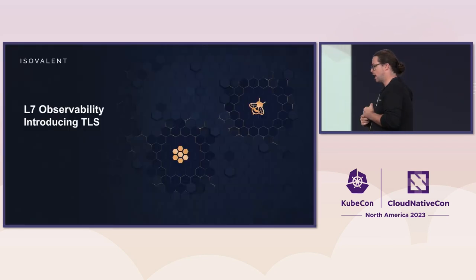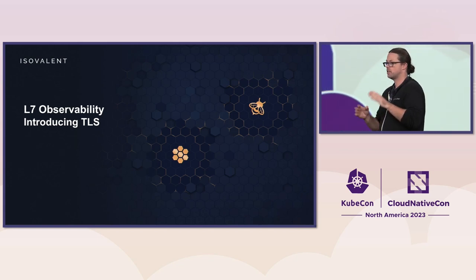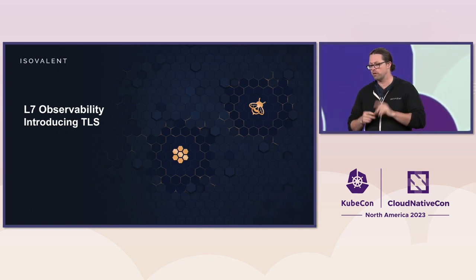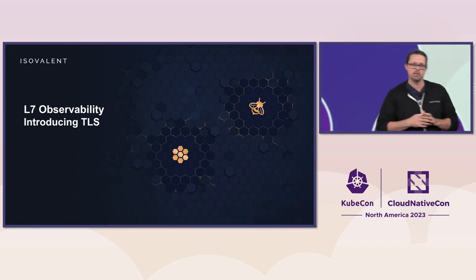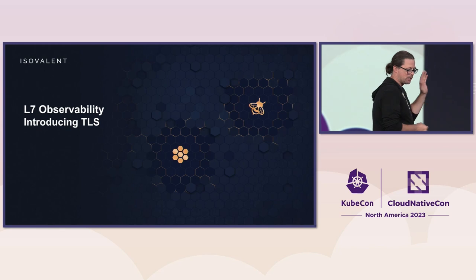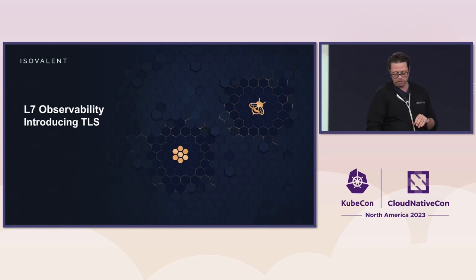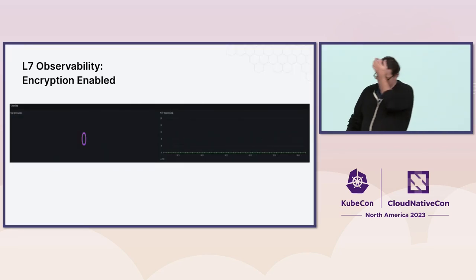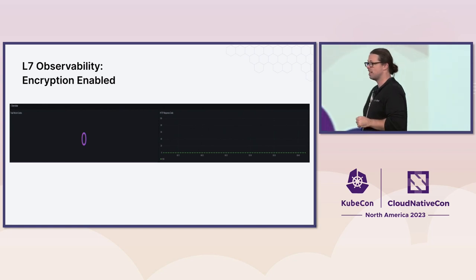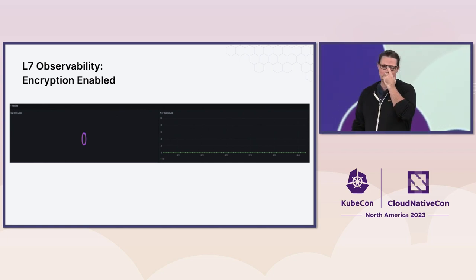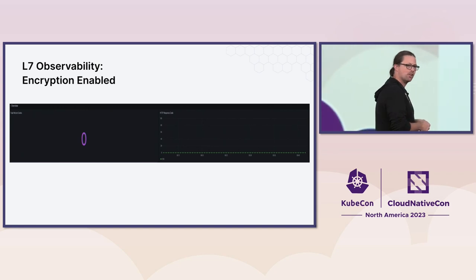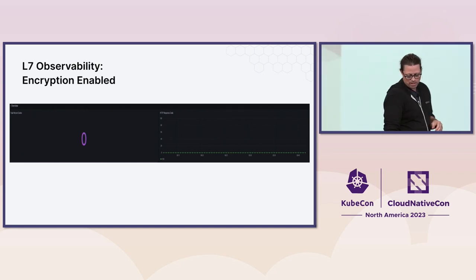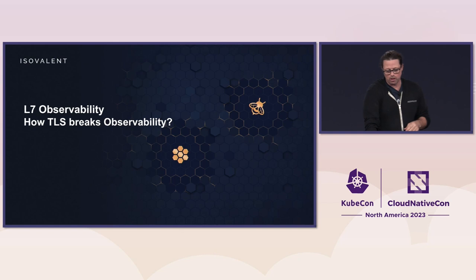But what happens when we want to encrypt stuff for zero trust, service mesh — all the words we keep hearing about? Everybody says let's encrypt, so we do that. And then our dashboards go blank, because everything's encrypted and we don't know anything about HTTP anymore because it's all wrapped in TLS. Everything's broken. We need to find a solution.